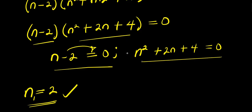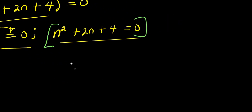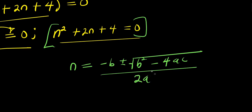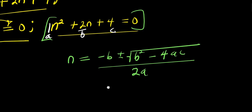Now solving for the other values of n, we need to solve the quadratic equation n² + 2n + 4 = 0 using the quadratic formula: n equals negative b plus or minus square root of b squared minus 4ac, divided by 2a. The coefficient of n² is 1 — that is a. The coefficient of n is 2 — that is b. And the constant 4 is c.